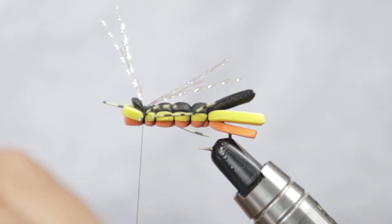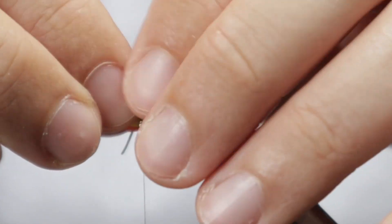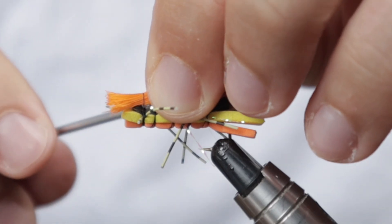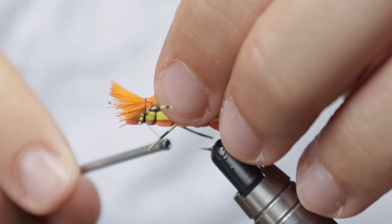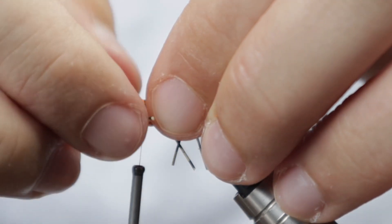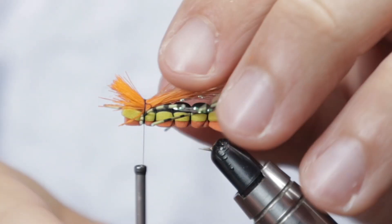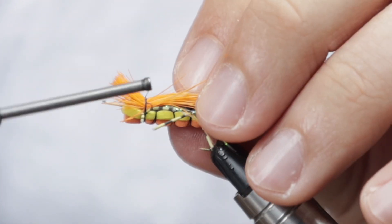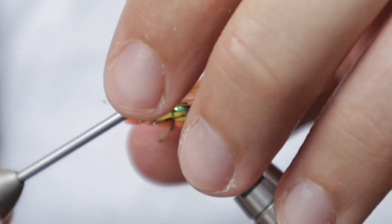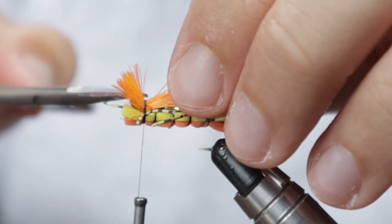Then we're going to add on a little bit of deer hair, but this is a bleached and dyed orange deer hair. Just add a little bit of a wing to the fly and also a bit of an additional sighter for the angler to be able to see where the fly is at. Make sure you've locked the deer hair in place and then come in and trim away these excess pieces.